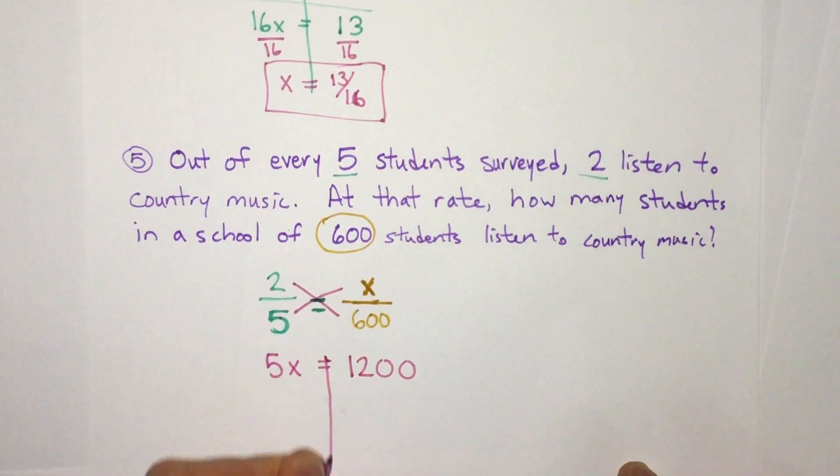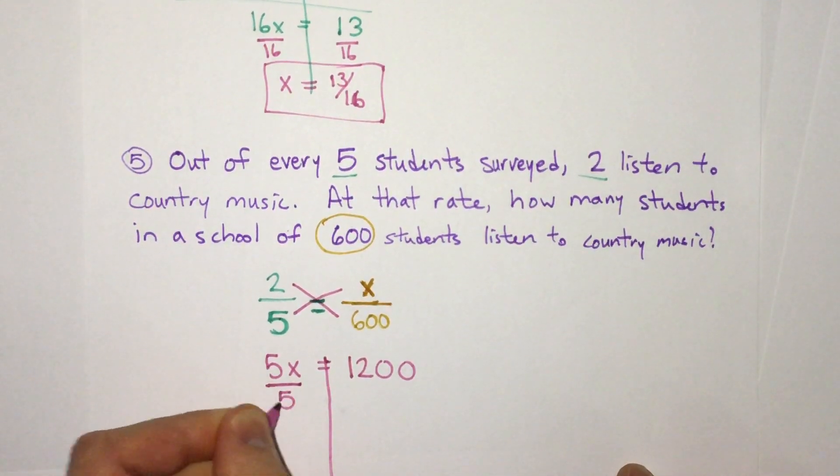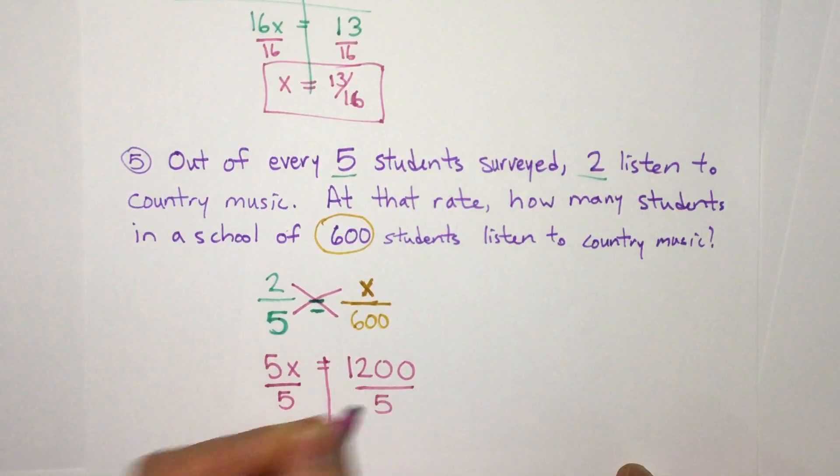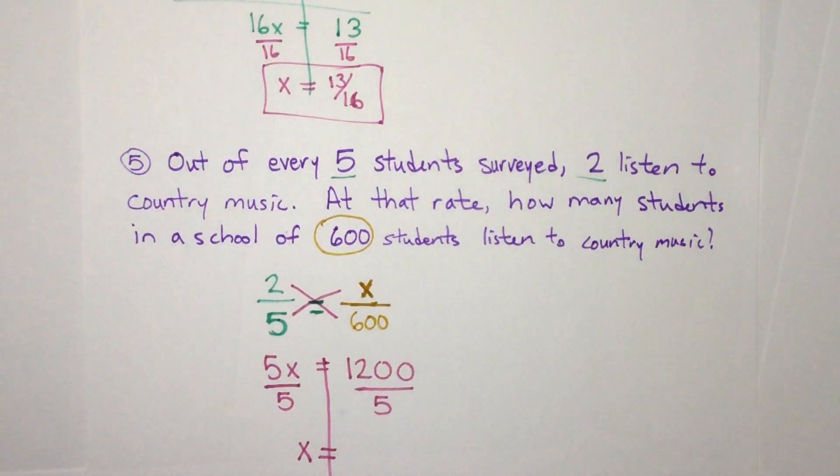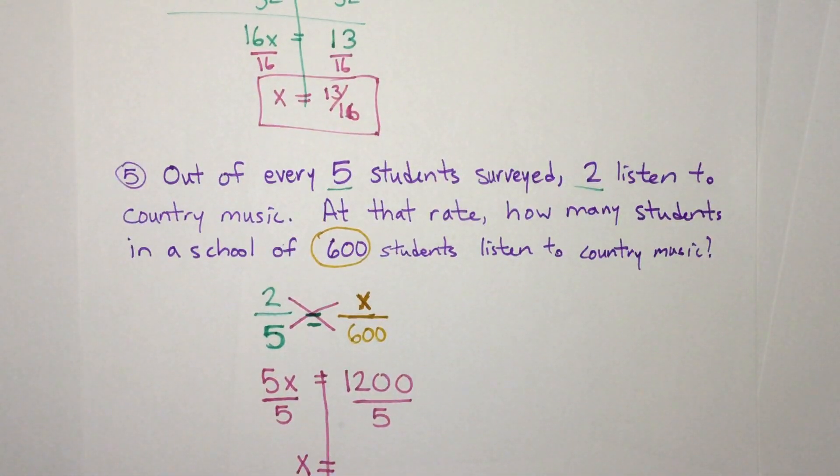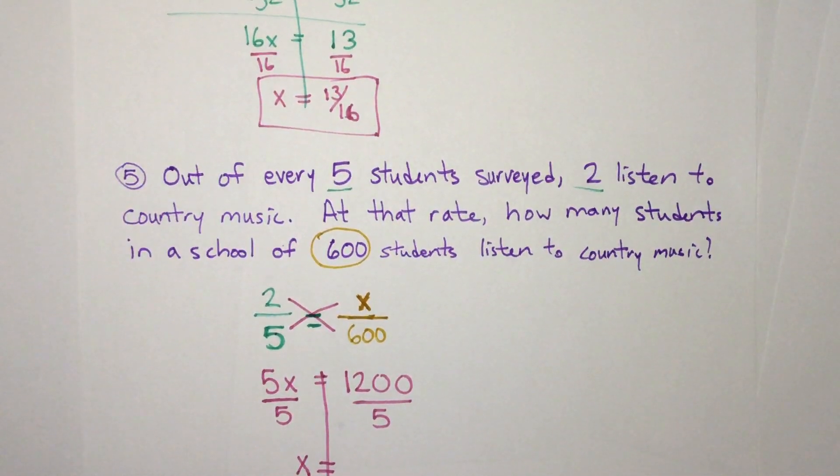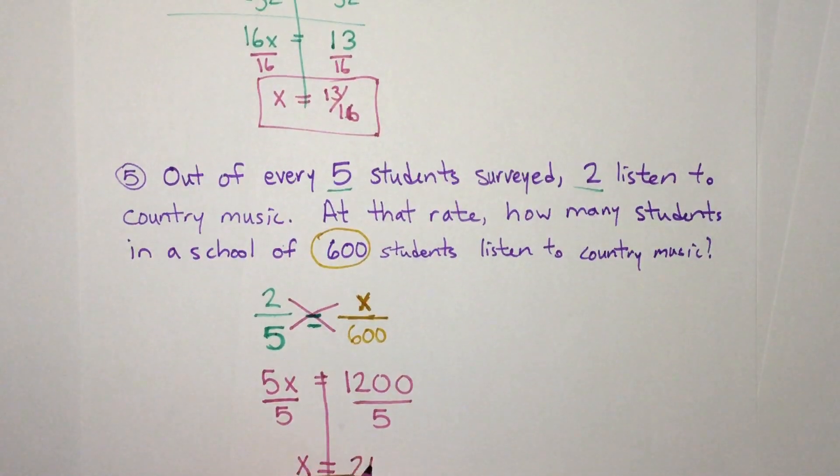And we have the same thing here. We can divide each of these by 5. So we get 5x divided by 5 is x. And then here, we have 1200 divided by 5. Well, we would need a calculator for that. Or we can do it in our heads too, but I'm going to use the calculator quick. So 1200 divided by 5, we get 240.